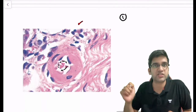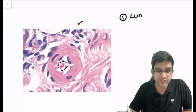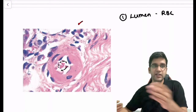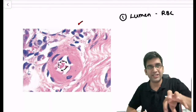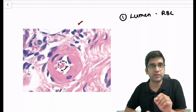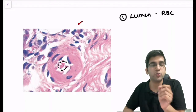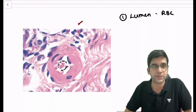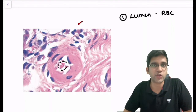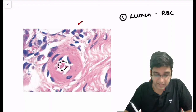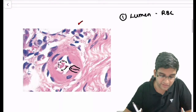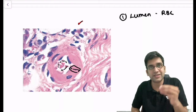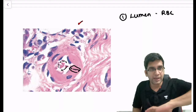Always look for the lumen. Most of the time lumens will have RBCs, so I can easily know it's a blood vessel. Now I said it's an arteriole or a capillary — in general, for an arteriole or a capillary, the tunica media will be very very thin. But here it's definitely a very thick tunica media for an arteriole or a capillary, which means something else is deposited in the tunica media.